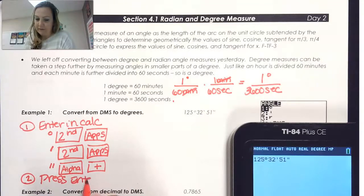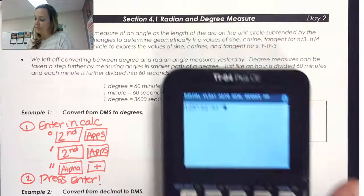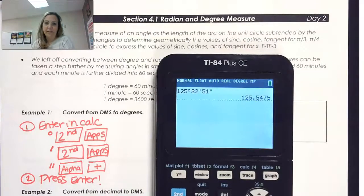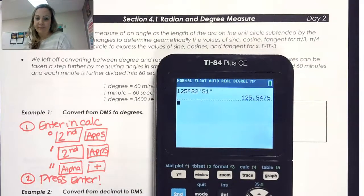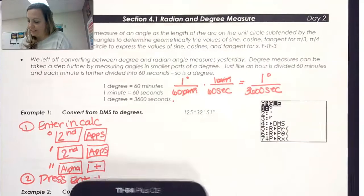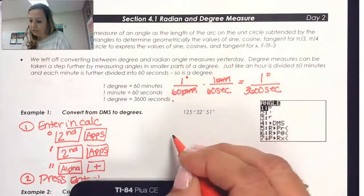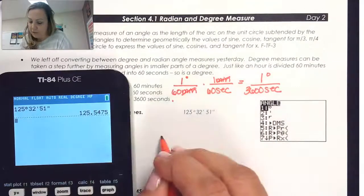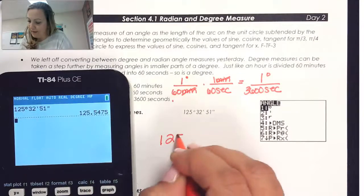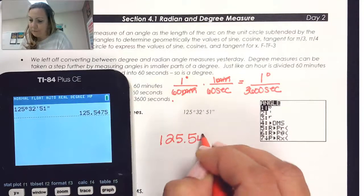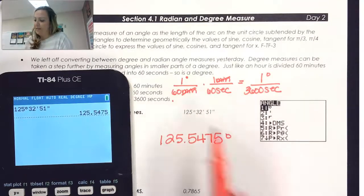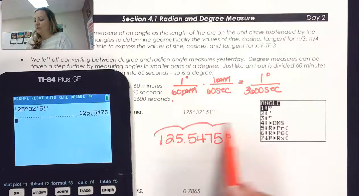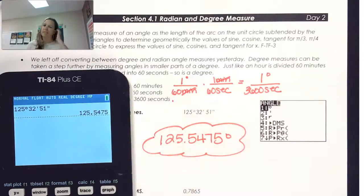Now it's entered into the calculator. All we need to do is press Enter and it'll convert it for us. We can see that this is equivalent to 125.5475 degrees. I know we usually round, but it's just one extra decimal so I'll keep it in.